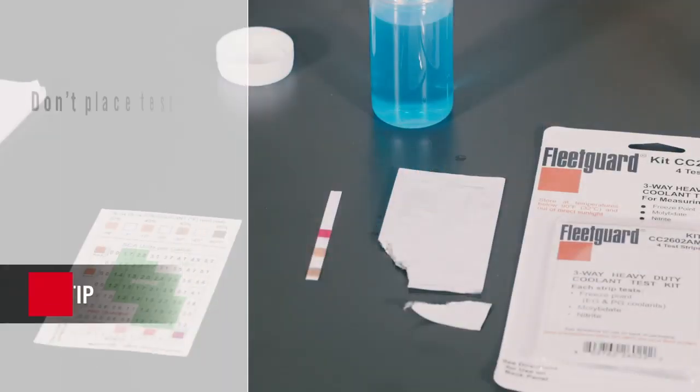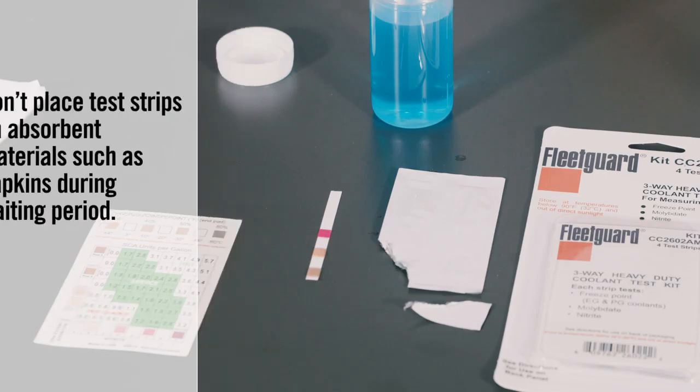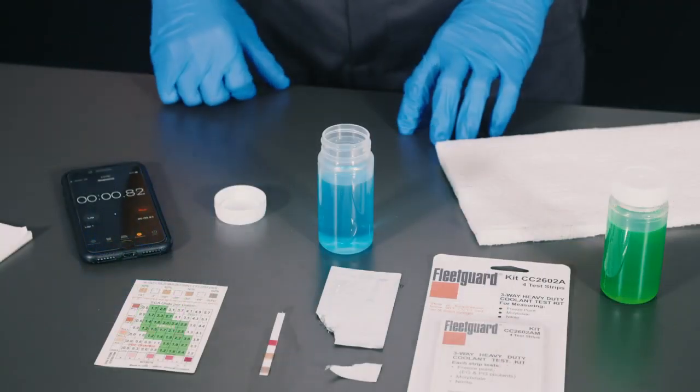Once you've done this, place the test strip down on a flat, non-porous surface like a table or countertop with the test pads facing up. Next, start the timer and wait 45 seconds before checking the results.